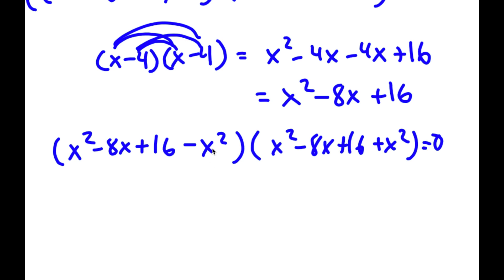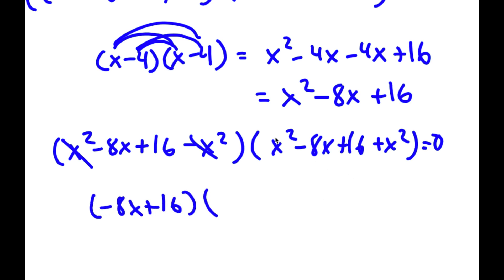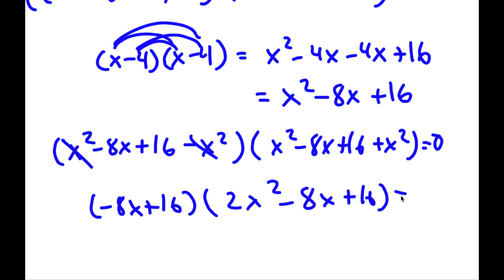On the left factor, x² and negative x² cancel out, leaving negative 8x plus 16. On the right factor, x² plus x² is 2x², giving 2x² minus 8x plus 16. So we have (negative 8x plus 16)(2x² minus 8x plus 16) equals zero.